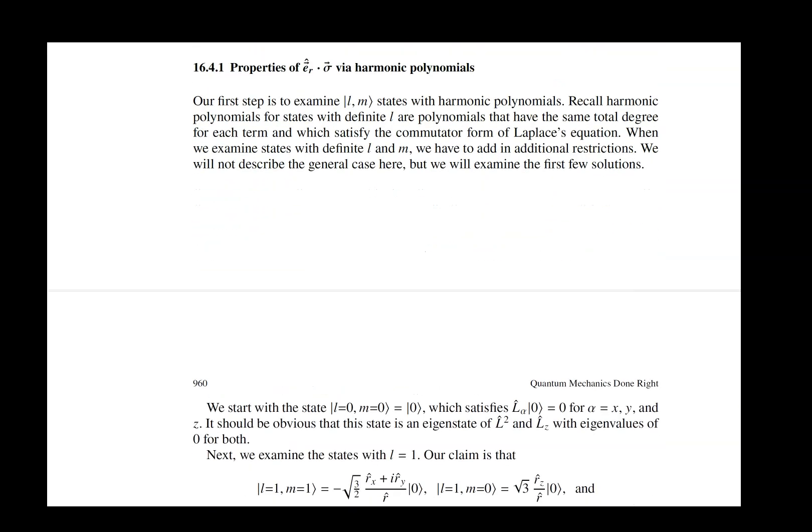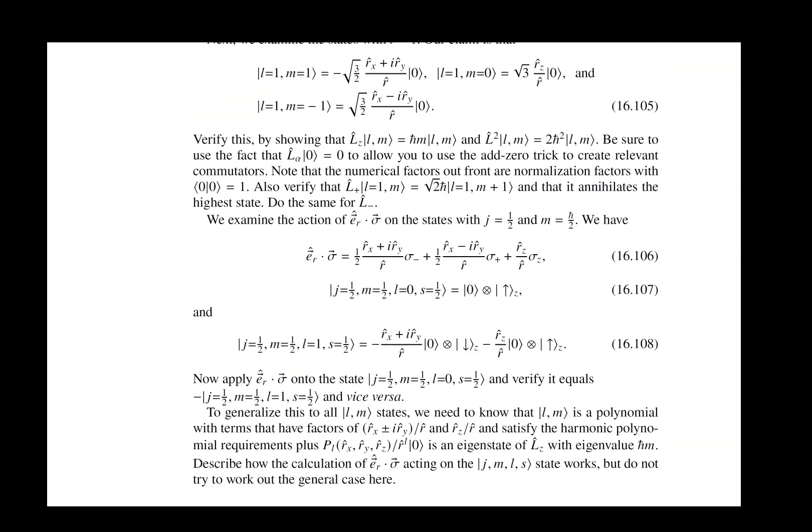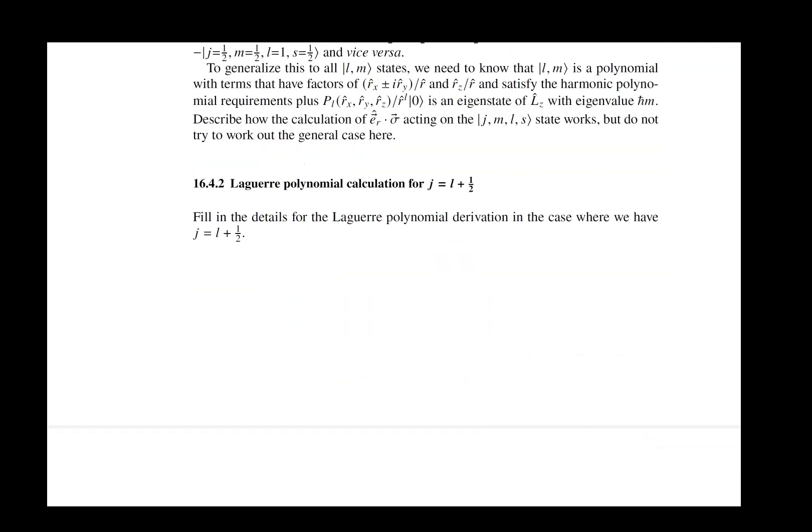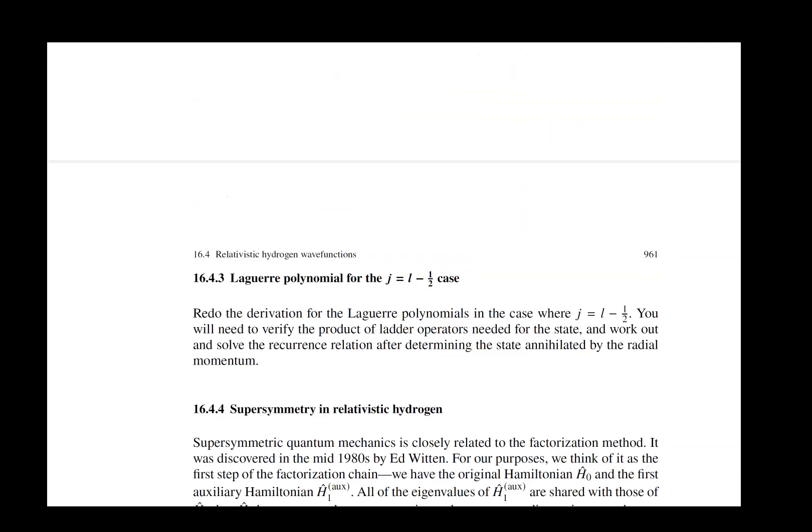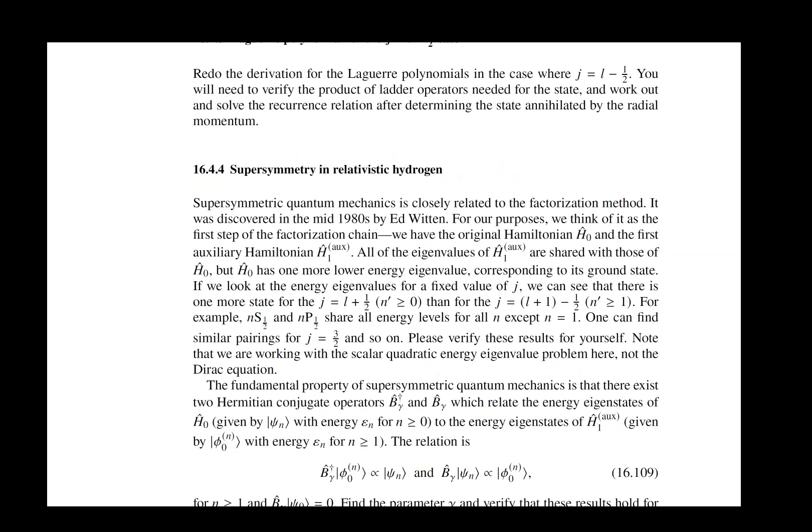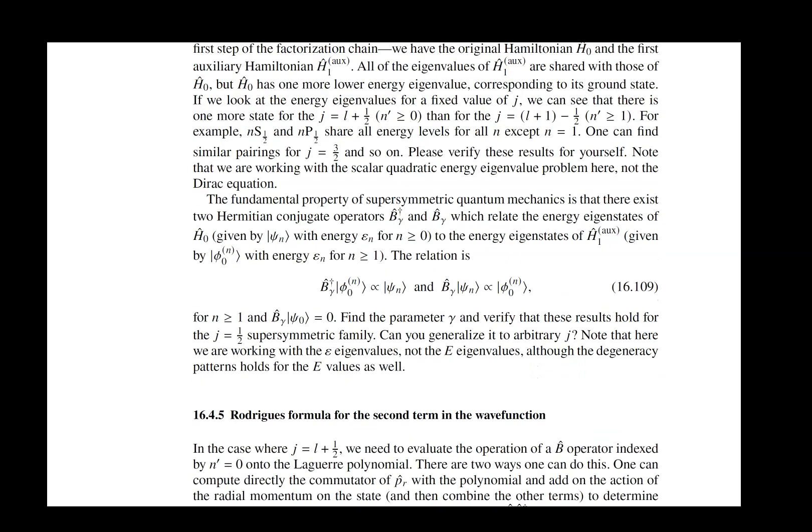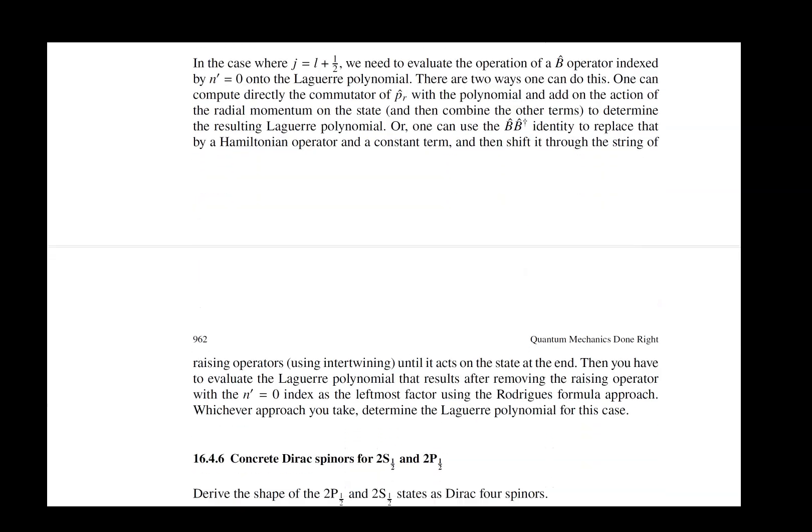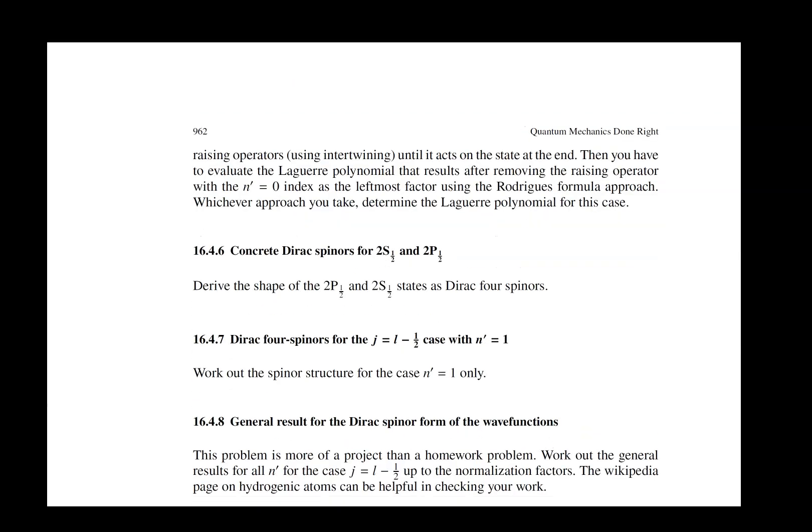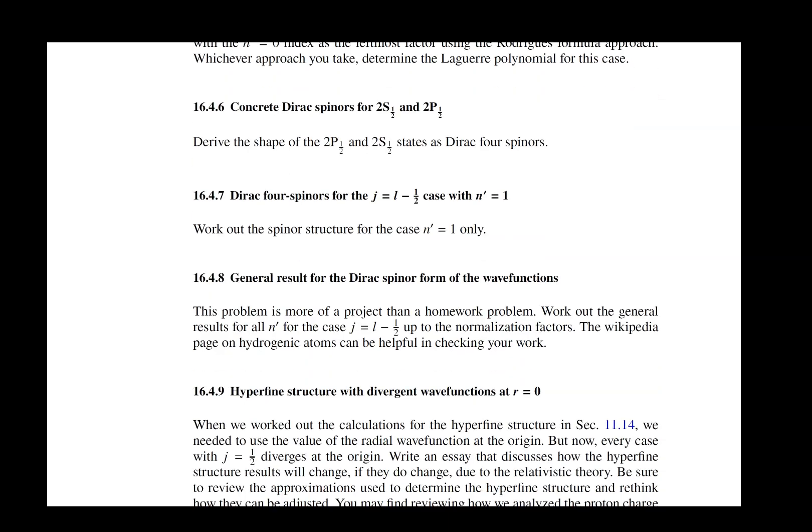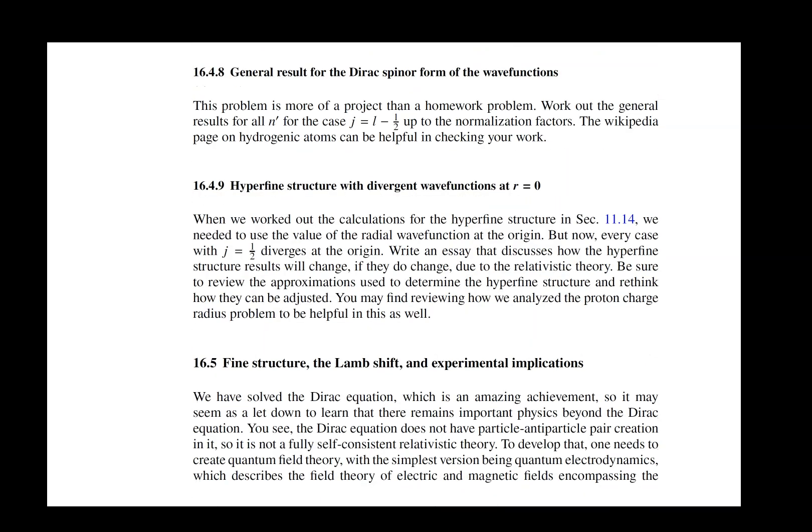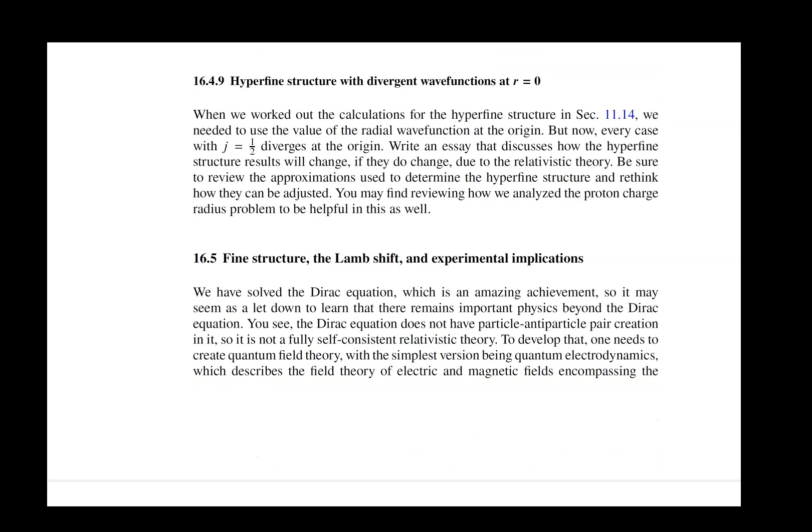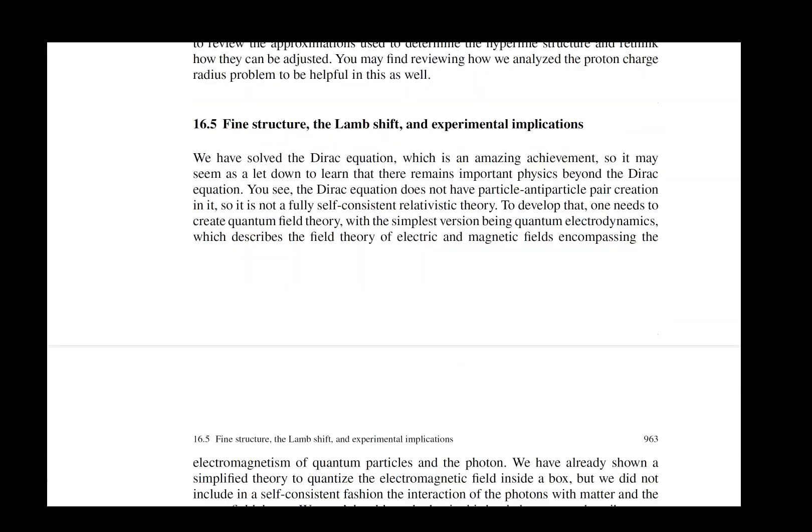But they're there, and there are some subtle things that occur in the relativistic solutions, such as the wave function now diverges as you go to the origin. That is a complication you have to deal with. There also are some very nice arguments related to Witten's supersymmetry, which as I've mentioned before, is closely related to the factorization method we've been using.